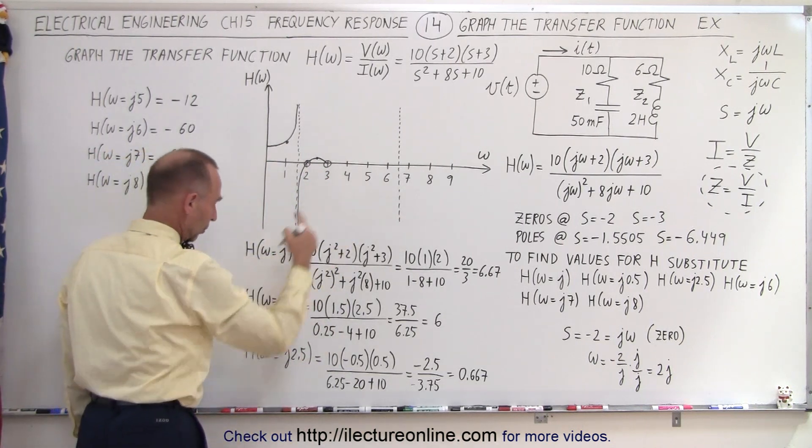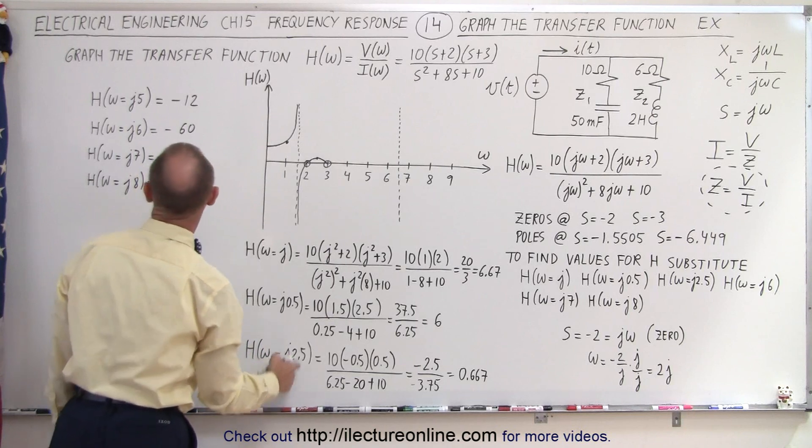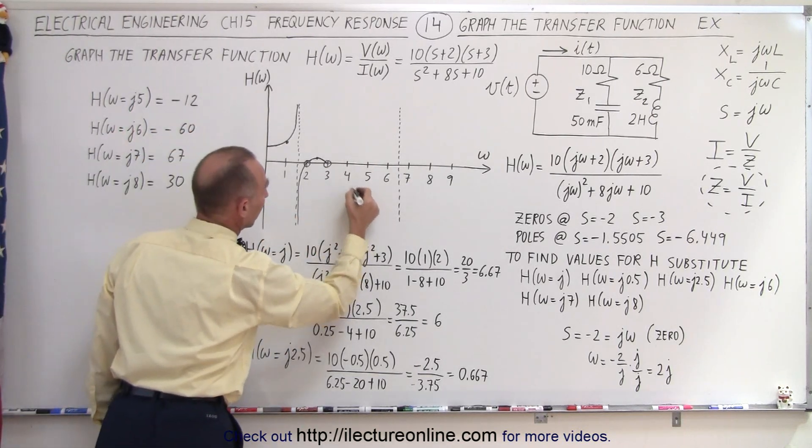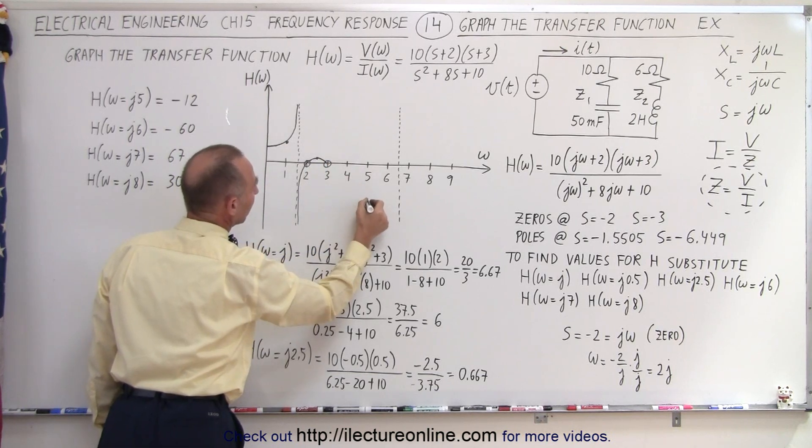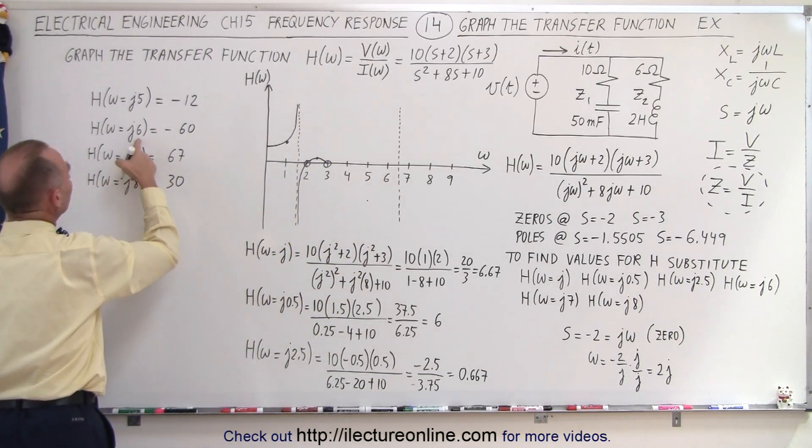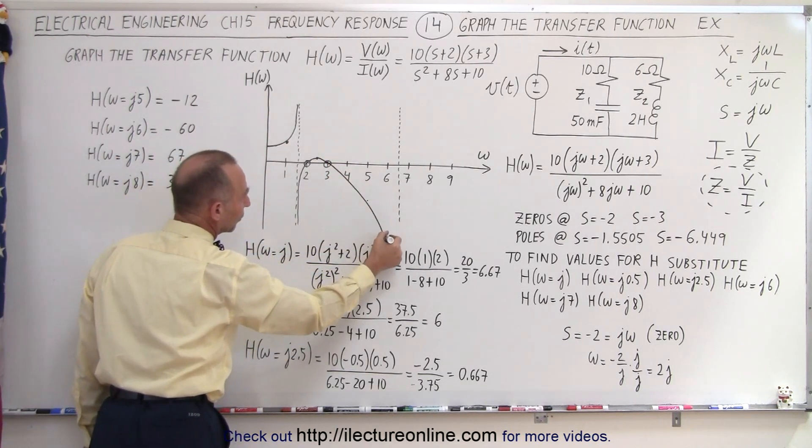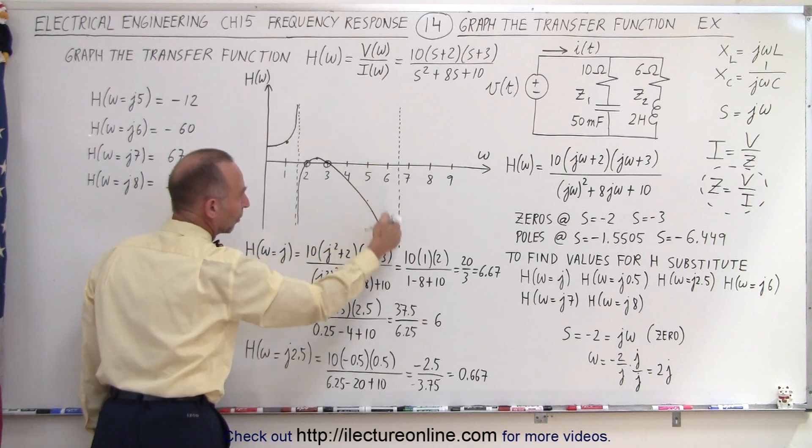What about the other side? Well, when we plug in j5, we get negative 12, and so we get something like this. And then when we plug in j6, we get negative 60, so we can see that the curve will then go this way asymptotically to the pole.